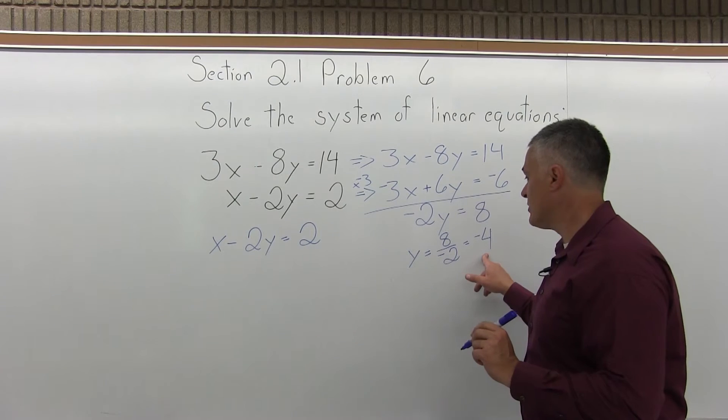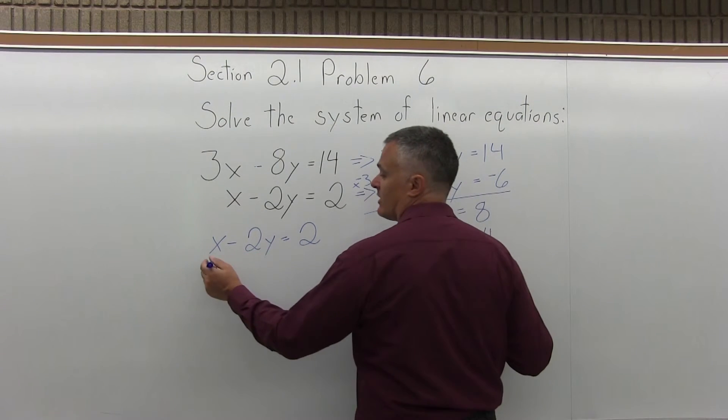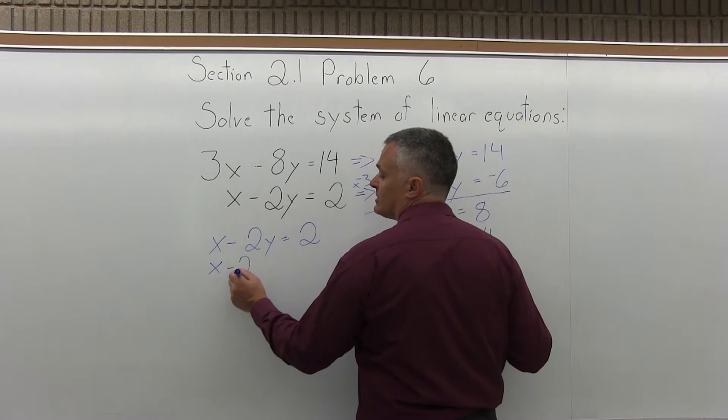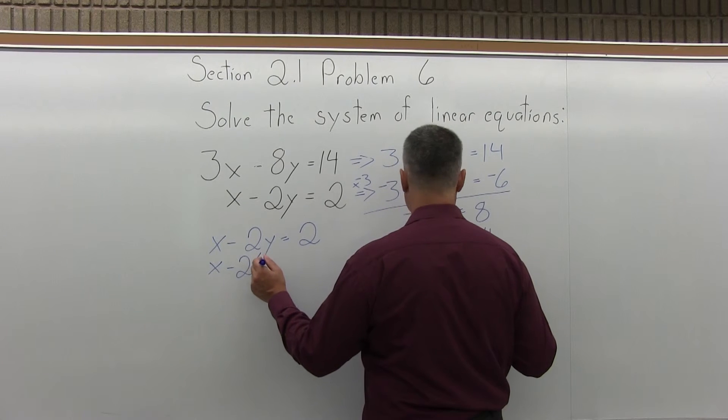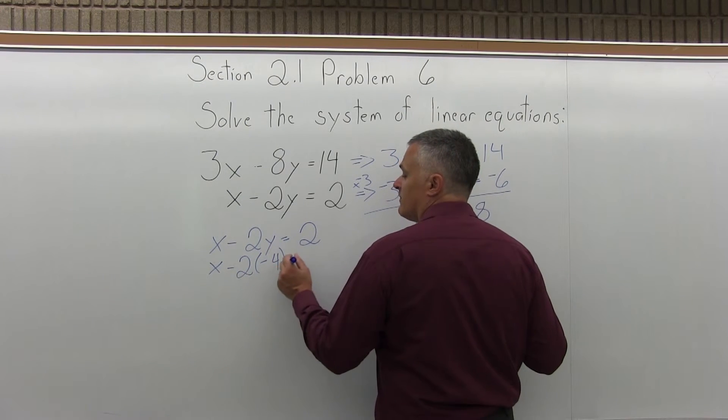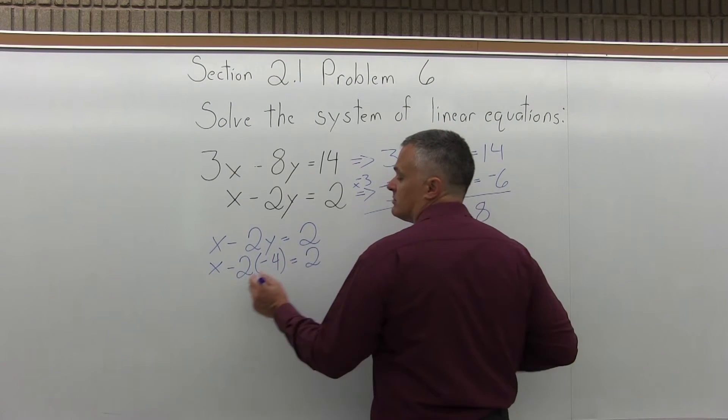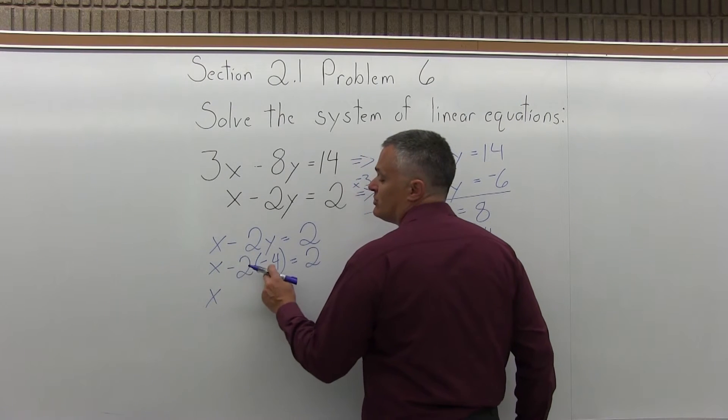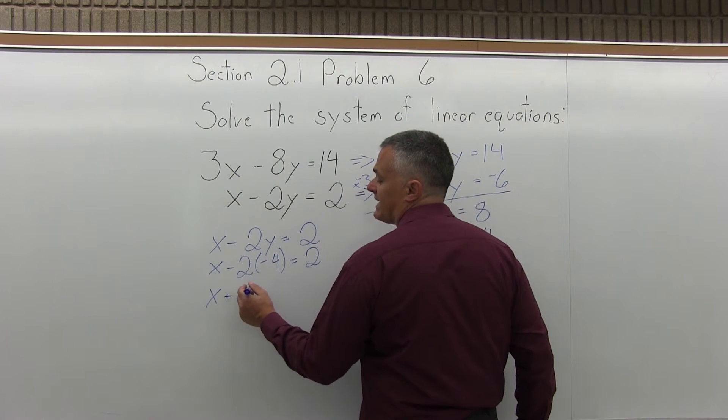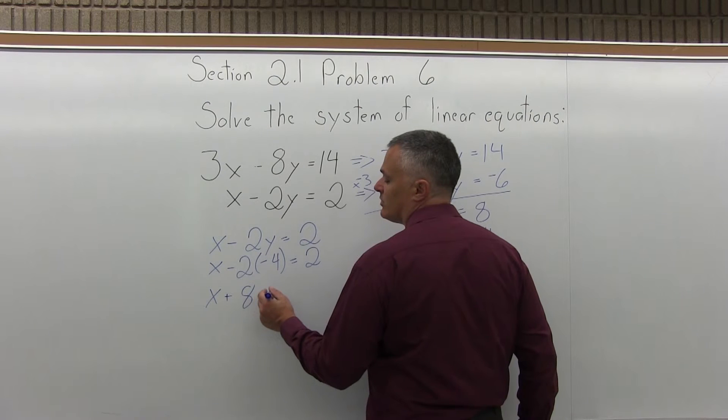Take my value of y equals negative 4 and put it in that equation. x minus 2 times minus 4 equals 2. So, minus 2 times minus 4 is going to give me x plus 8 equals 2.